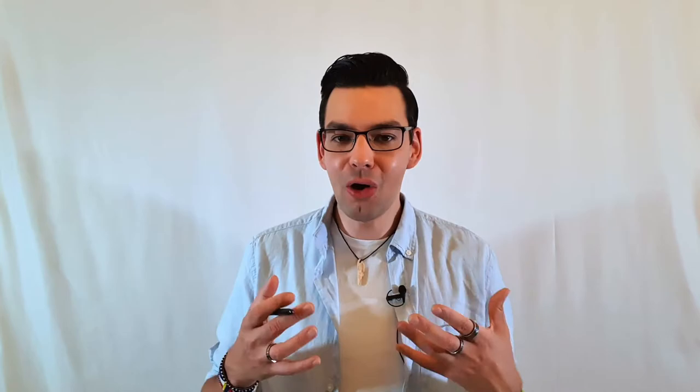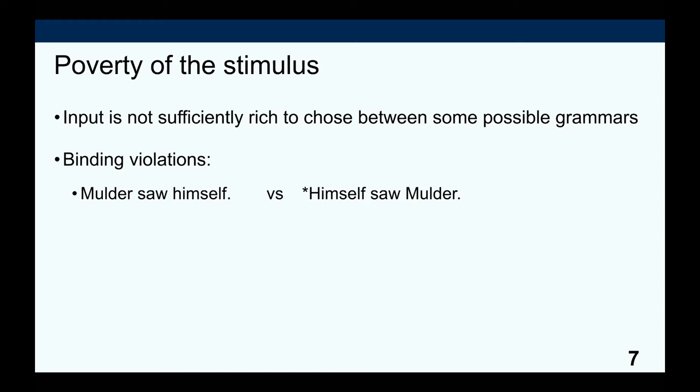However, children also face the opposite problem: what's been called the poverty of the stimulus. This is a very important argument in linguistics and is still hotly debated across cognitive science and psychology. The basic argument says that the input is not sufficiently rich to choose between some possible grammars or grammatical analyses the child should entertain. For example, recall that in the video on syntactic dependencies we talked about reflexive pronouns and the kinds of expressions they can refer to — technically known as binding.